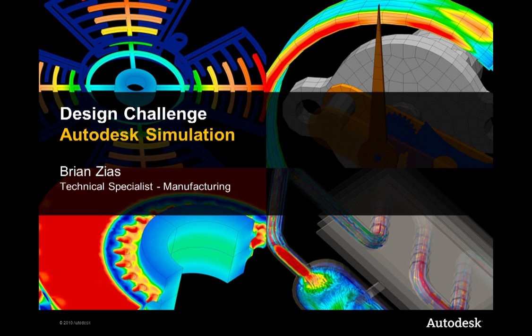Autodesk helps customers design better products by enabling them to create digital models and digital workflows that can be used to experience ideas before they're real and improve the way products look, perform, and are used in the real world. How can we help create designs that are cost-effective, safe, and reliable while increasing bottom line and shortening time to market?